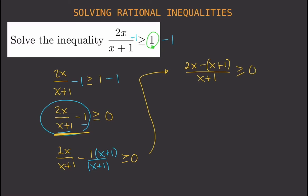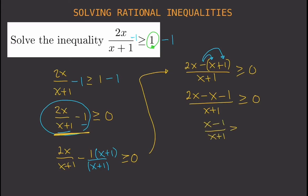Then you simplify. You distribute the negative sign to both terms in the parentheses: minus x plus 1 becomes minus x minus 1. So you get 2x minus x minus 1 over x plus 1, which simplifies to x minus 1 over x plus 1 is greater than or equal to 0. This is the inequality we'll use for the next step.